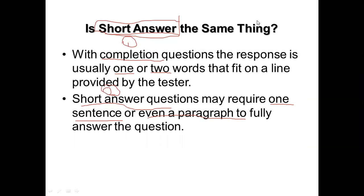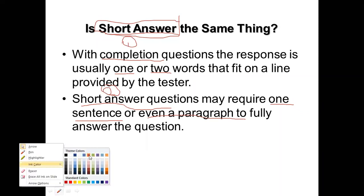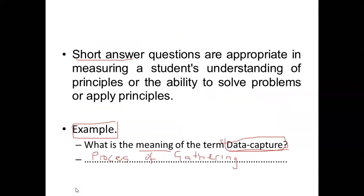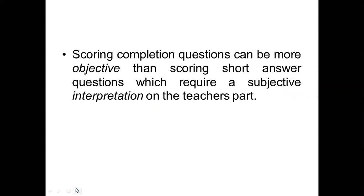We've established that for completion questions, the response is usually one or two words. It's about filling a blank space. You have a blank space, and in that blank space you complete that particular question. But for short answers, it requires you to give a sentence or even a paragraph. That's the difference between the two.